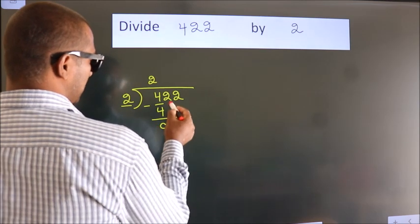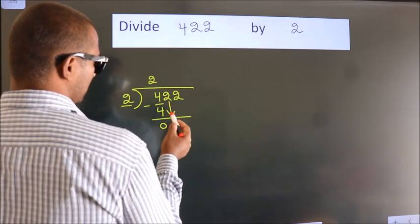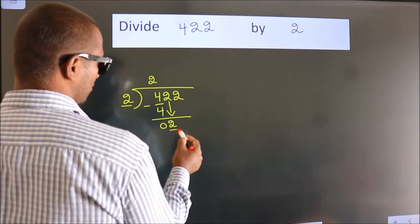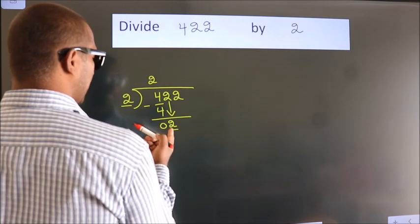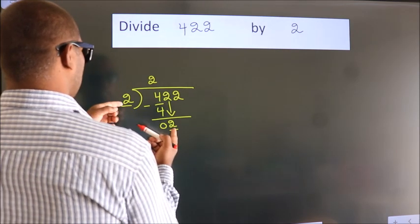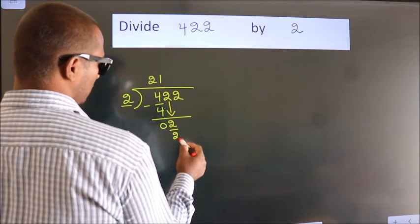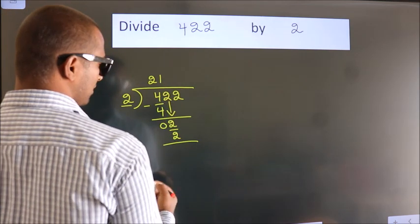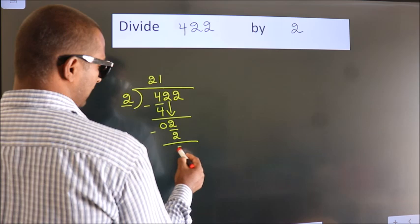After this, bring down the beside number. So 2 down. So 2. When do we get 2? In 2 table. 2 1s, 2. Now we subtract. We get 0.